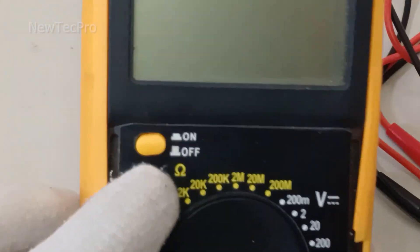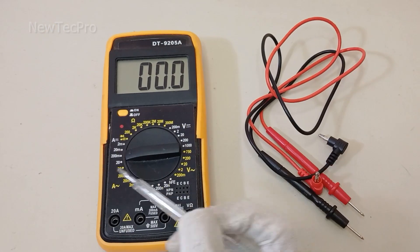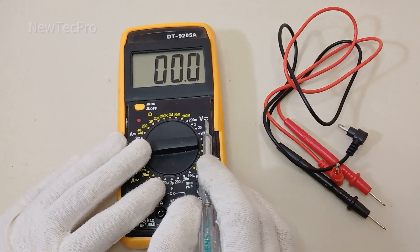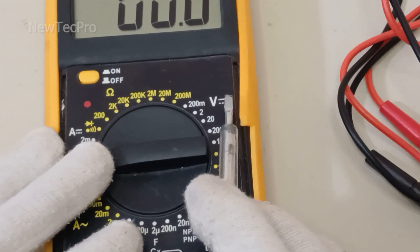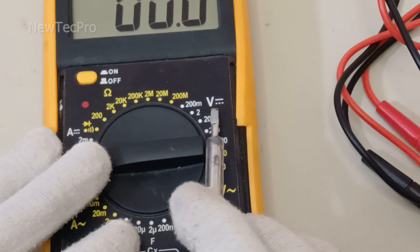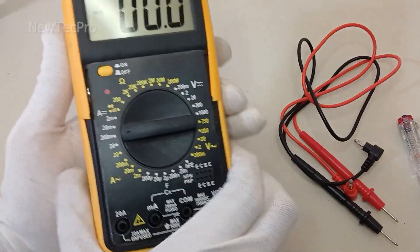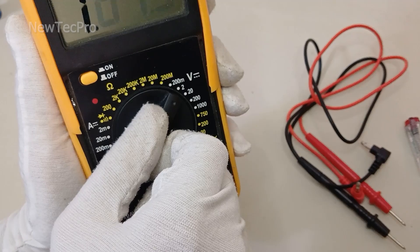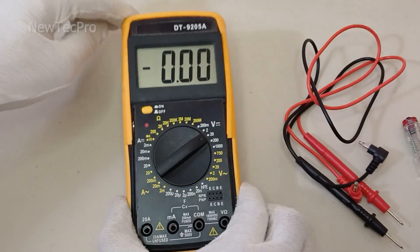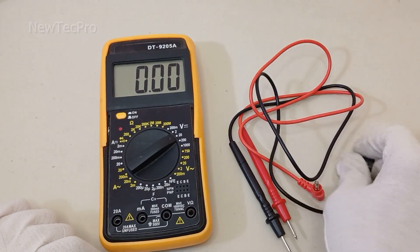This is usually represented by a V with a straight line above it. You can see. Step two: connect the probes.